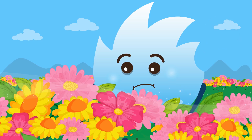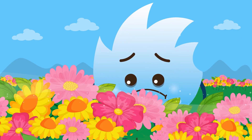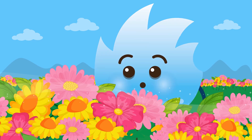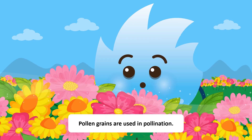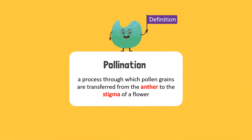Spiky is allergic to pollen. Oh dear, walking in a flower garden is definitely not a good idea. Pollen grains are small particles that are present in the anther sacks of flowers. They are used in pollination. Pollination is a process where pollen grains are transferred from the anther to the stigma of a flower.